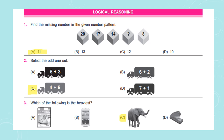Let's discuss the answers. In question number 1, we have to find the missing number. We need to find the pattern the numbers follow. Here, 20, 17, 14 — the pattern is minus 3. So 20 minus 3 is 17, 17 minus 3 is 14, 14 minus 3 is 11, and 11 minus 3 is 8. Hence, the answer is Option A: 11.